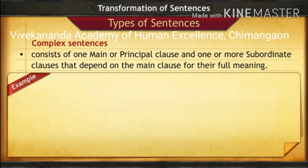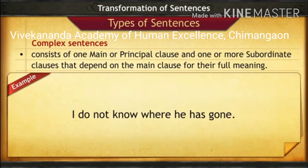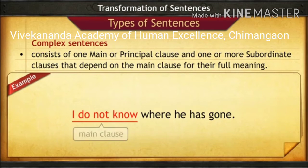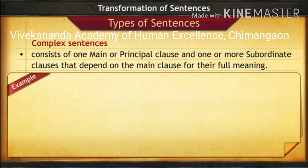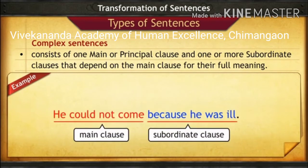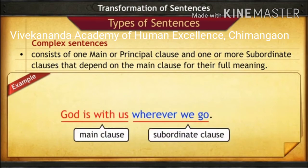For example: 'I do not know where he has gone.' Here 'I do not know' is the main clause, and 'where he has gone' is the subordinate clause. The subordinate clause gets its meaning from the main clause. Another example: 'He could not come because he was ill.' Here 'because he was ill' is the subordinate clause, and it completes the meaning with the main clause.